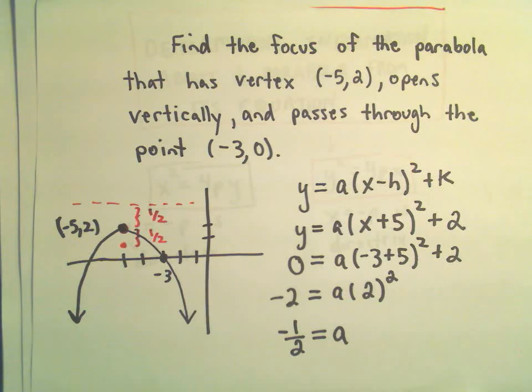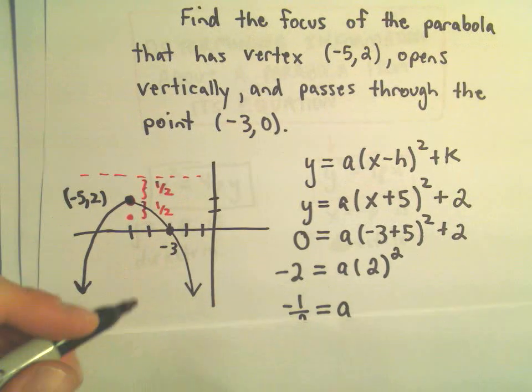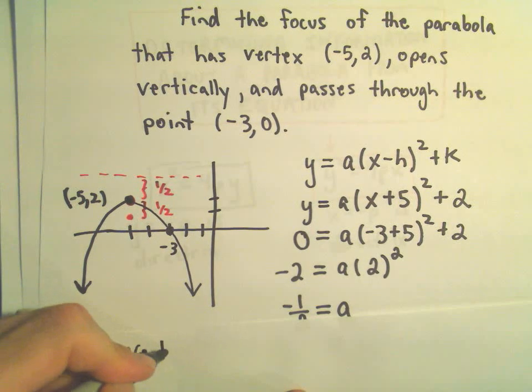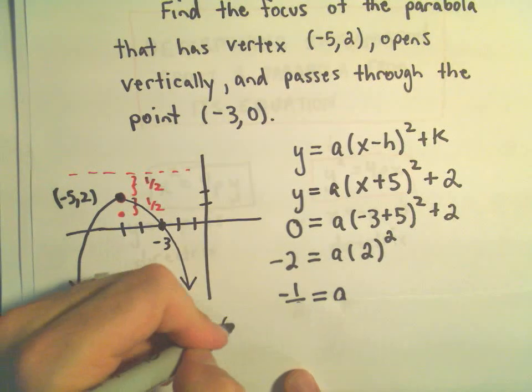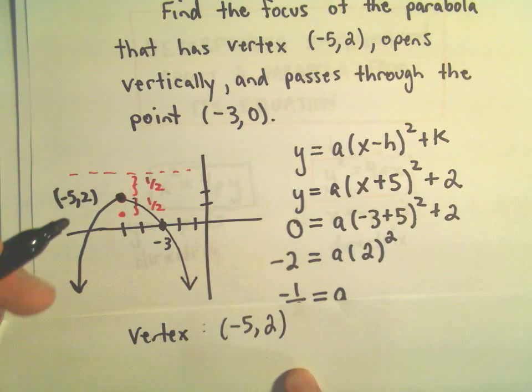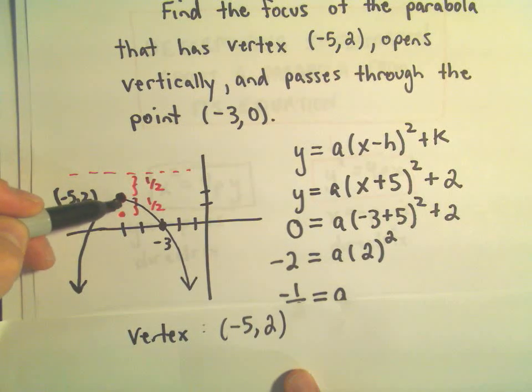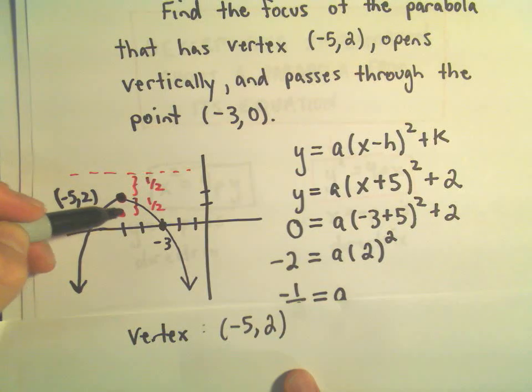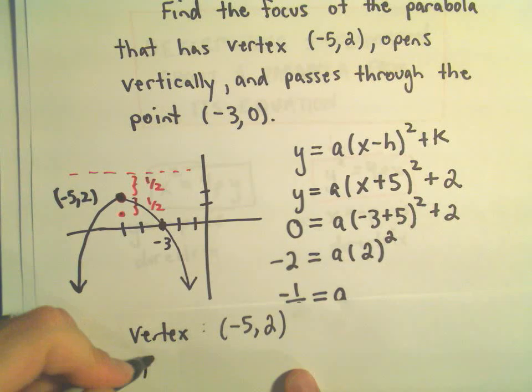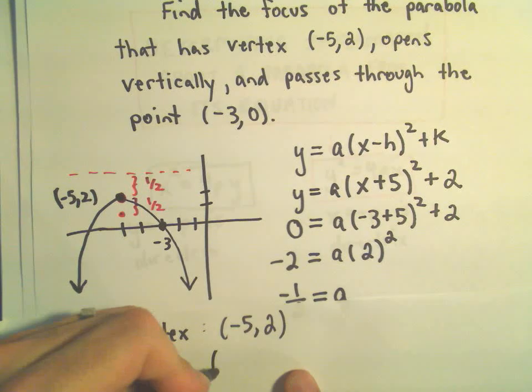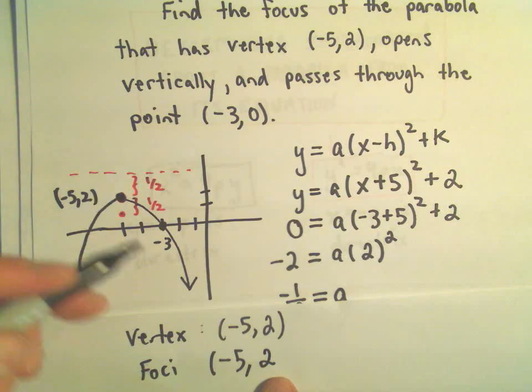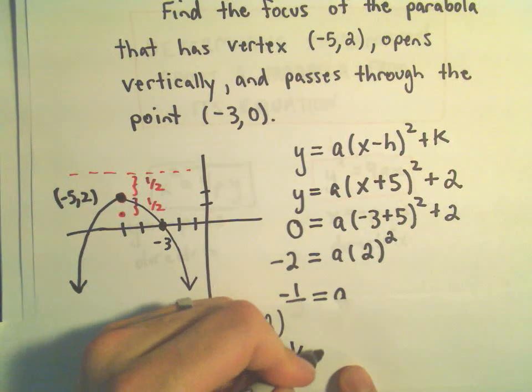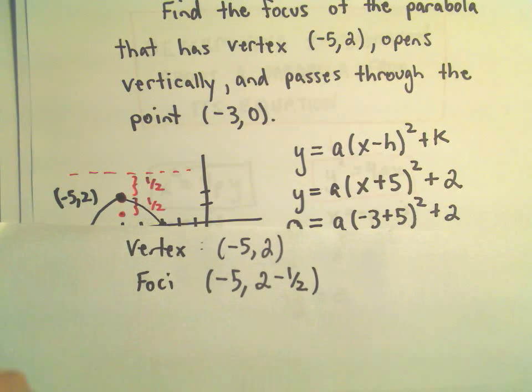We can now use this information because the vertex is at the point (-5, 2). I'm moving down to get to the focus. If I'm moving down 1/2 unit, I would take my original y value where the vertex was and subtract 1/2 from that.